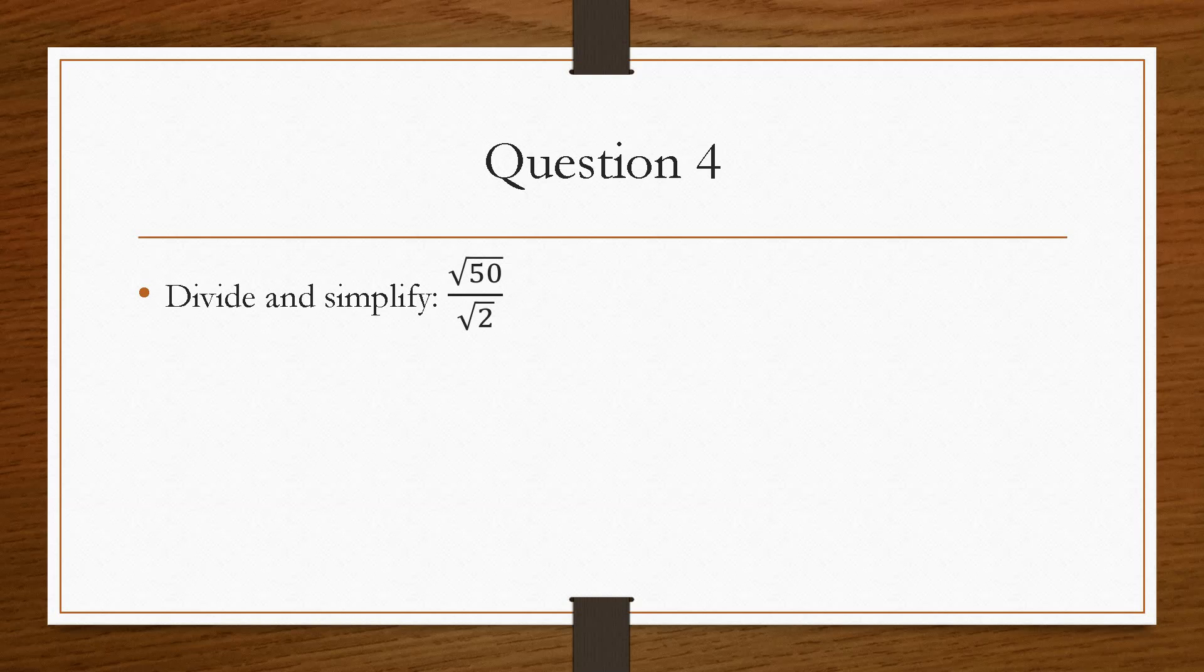And then lastly, question number 4, if we divide and simplify √50 over √2. Now we'll use this rule this time, because we sometimes can be given it in this form, other times we can be given it in this form. But they both will equal this form here. So we can rewrite this as the square root of 50 divided by 2, which will be the square root of 25.